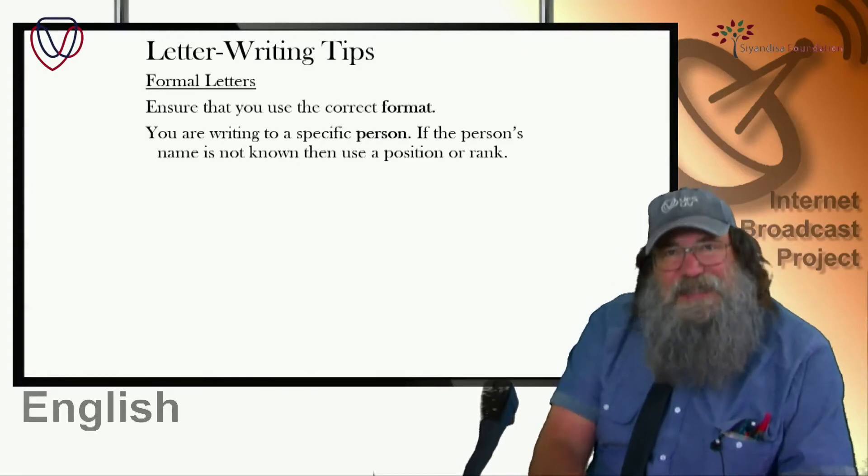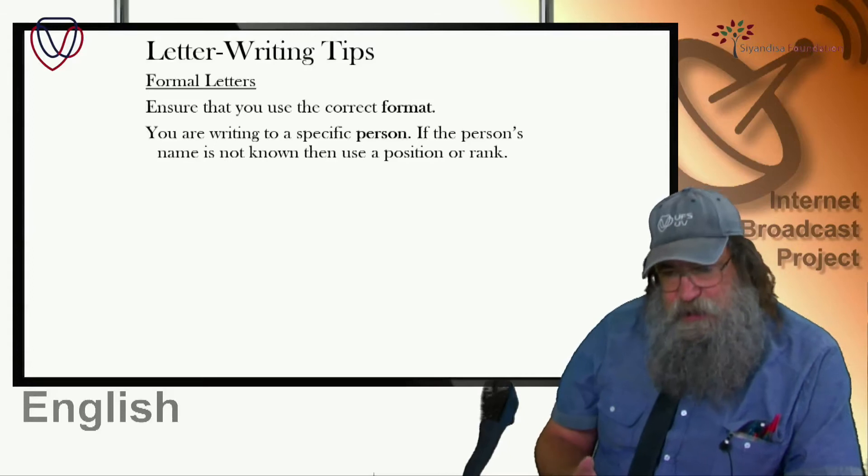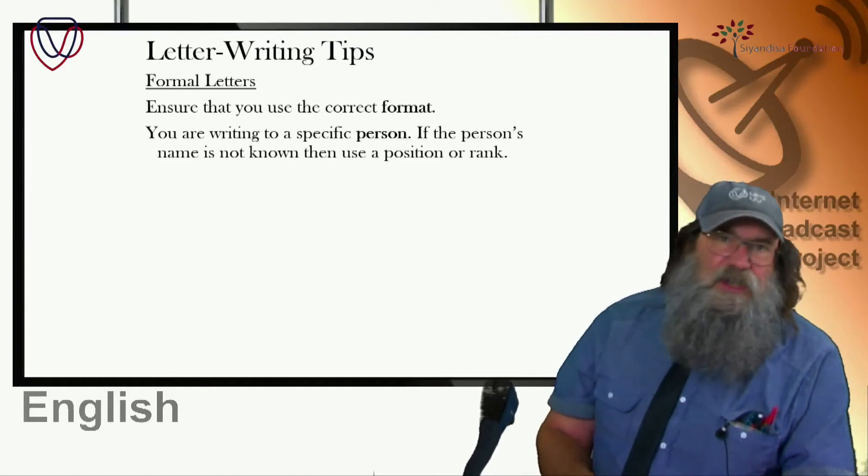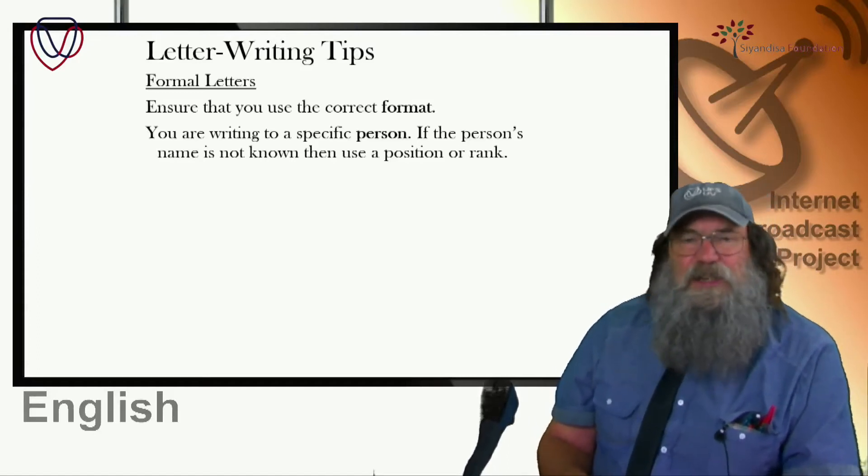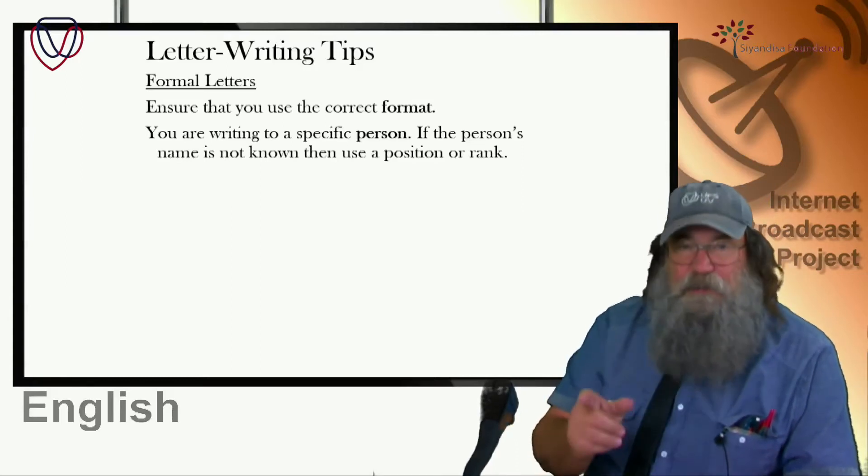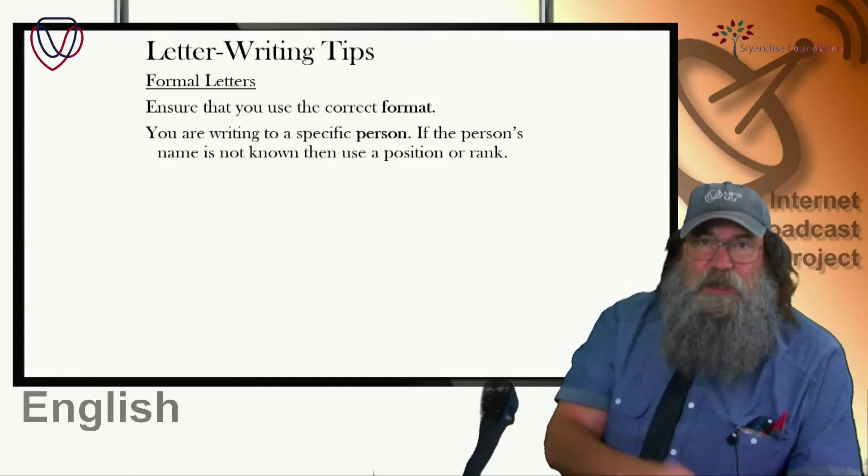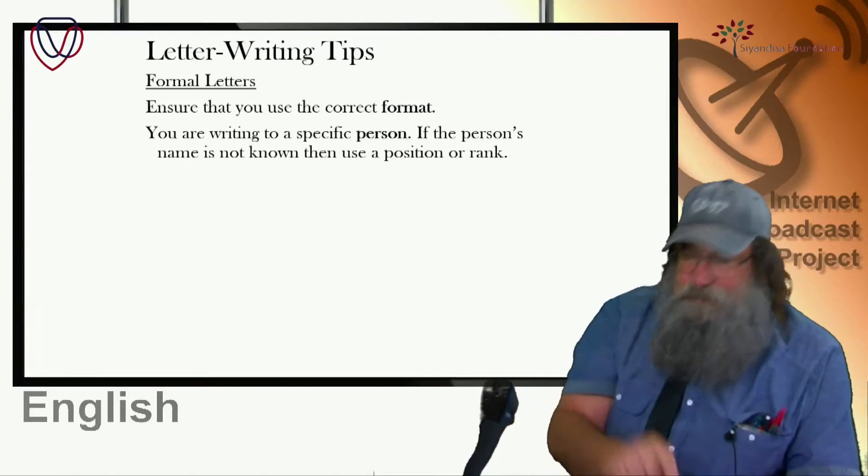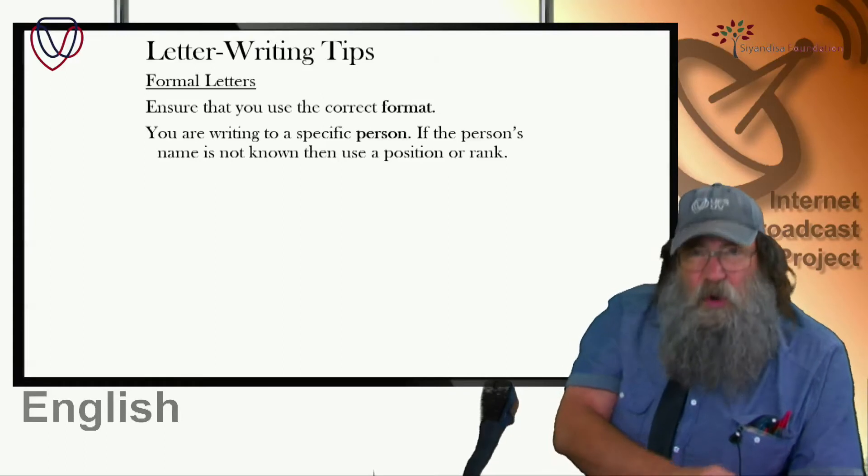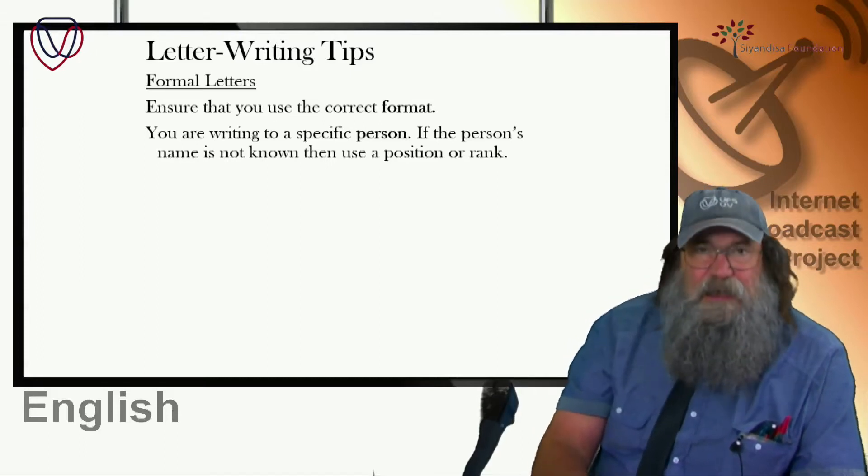Now, the next thing. This is critical. You are writing to a specific person. If the person's name is not known, then use a position or rank. In the book, it's got the chief accountant. Very often, we'll have the store manager or the managing director or the personnel manager. Or if you're writing to a school, you can be writing to the principal. If you don't know who the principal is, it's just the principal. If you do know who it is, then you would address it to the name and position. A letter is always to a specific person.